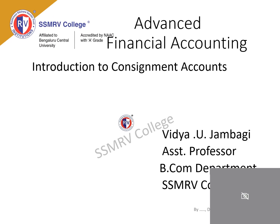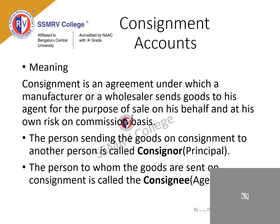Introduction to Consignment Accounts. Let us look at the meaning of the term consignment. Consignment is an agreement under which a manufacturer or a wholesaler sends goods to his agent for the purpose of sale on his behalf and at his own risk on a commission basis. Consignment is different from sale — consignment means sending goods to somebody else who will sell the goods on your behalf.